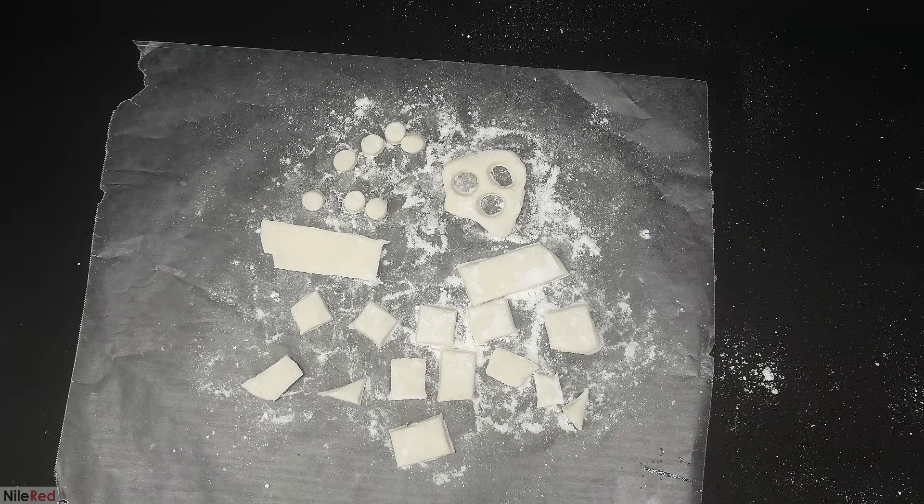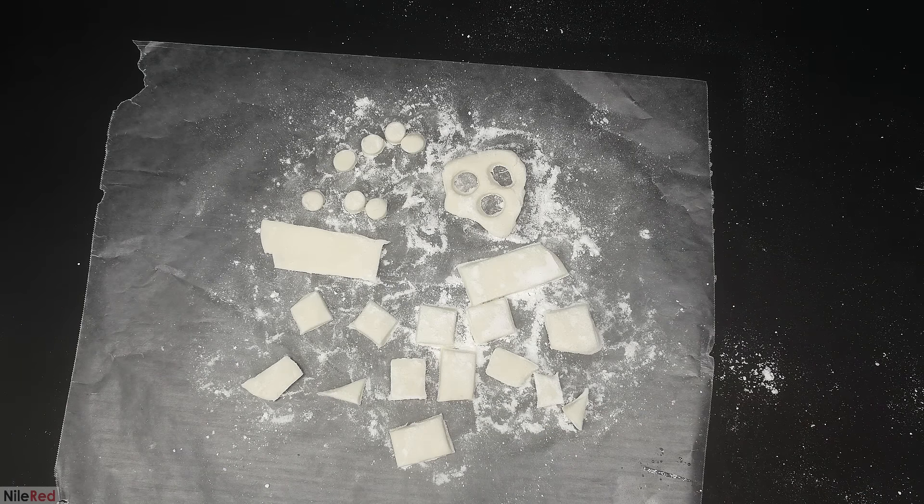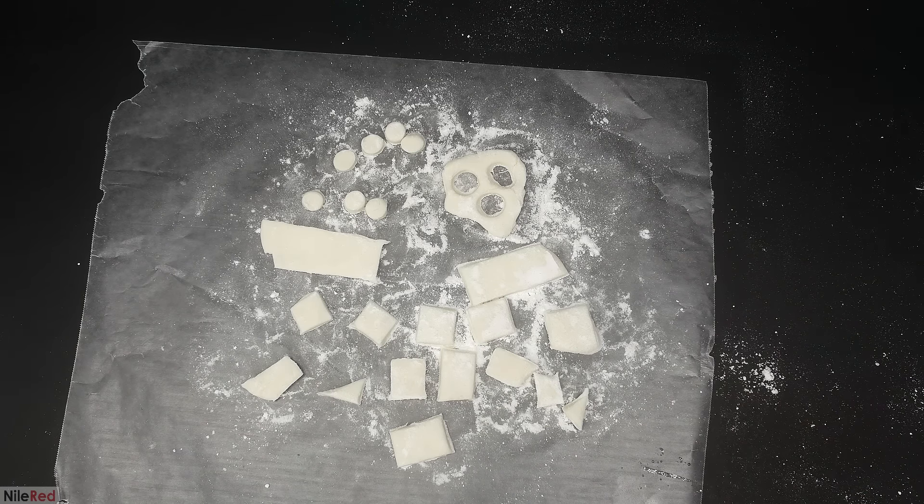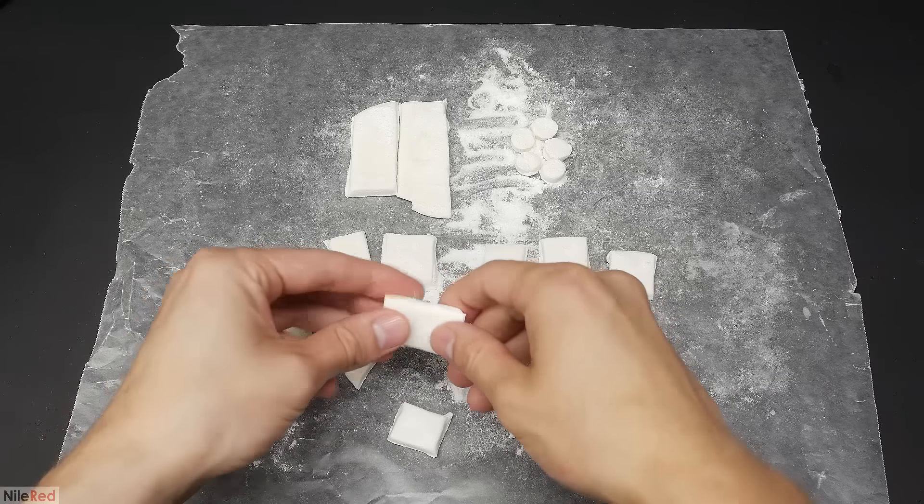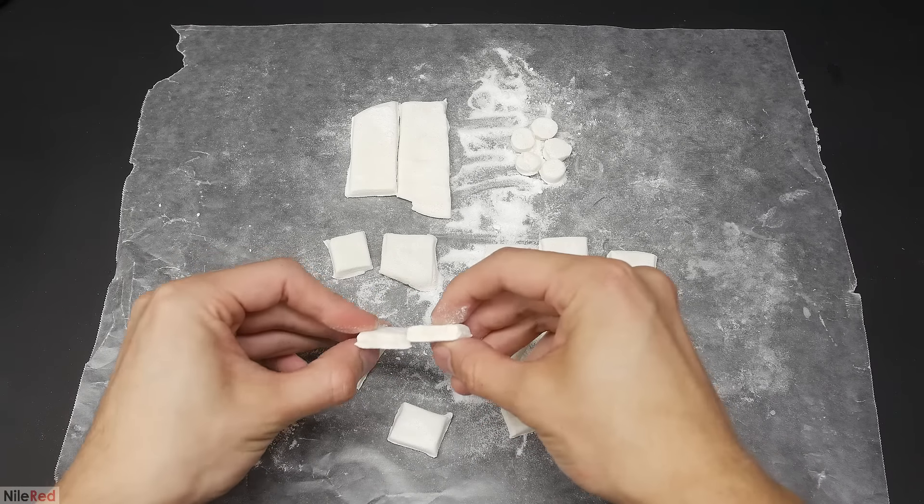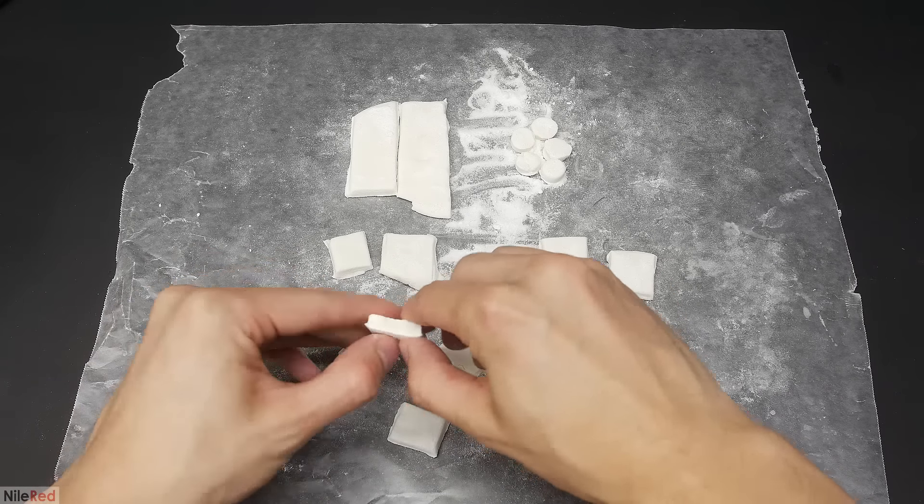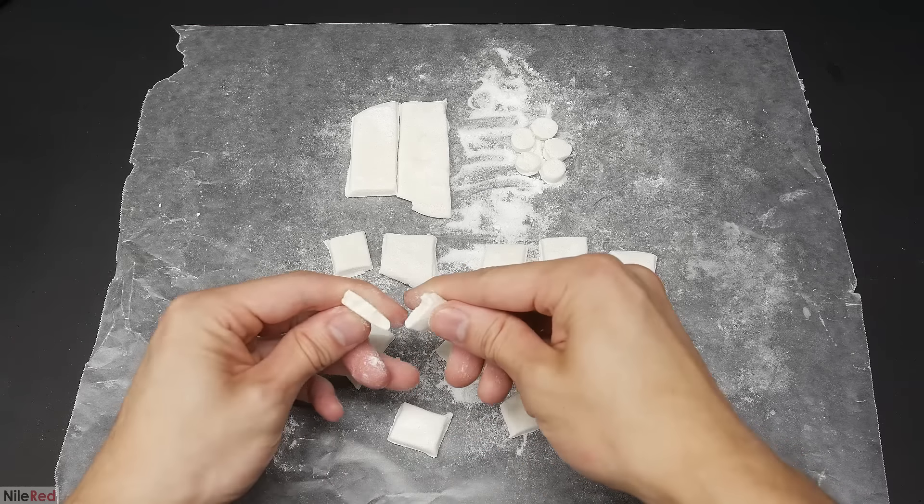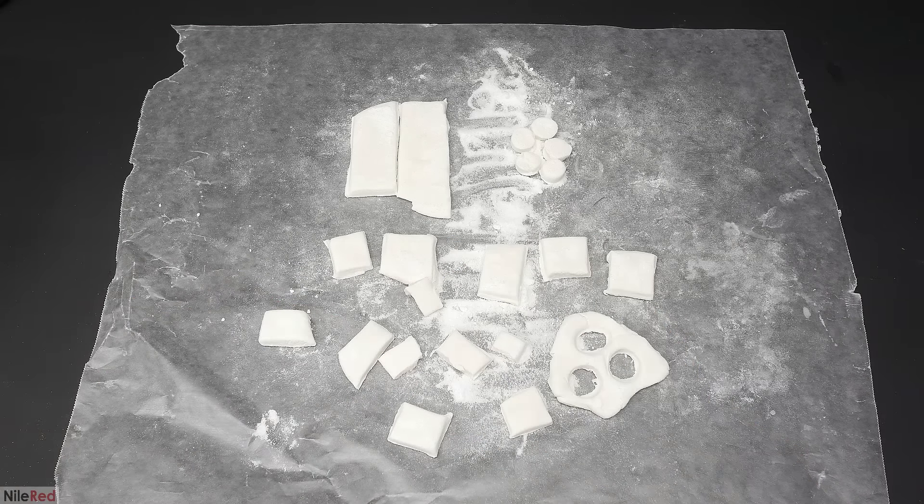When I'm done cutting them, they need to be hardened, which is done by just letting them sit out to dry. After a few days, they were much harder, but the inside was still a little bit soft. I think to fully harden them, I'd have to leave them for about a week, or I could just make them thinner.